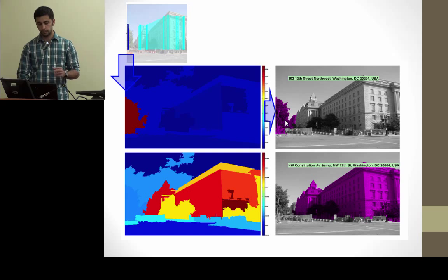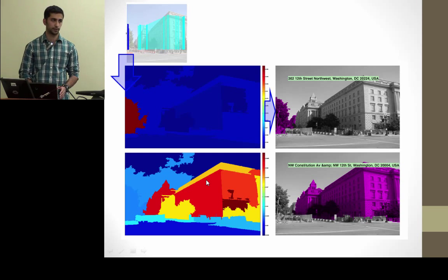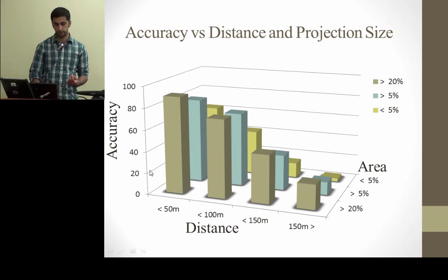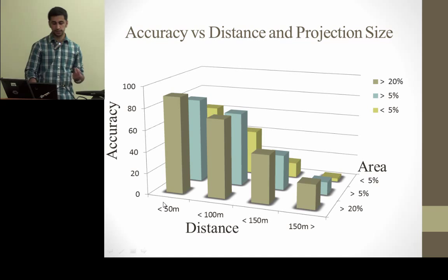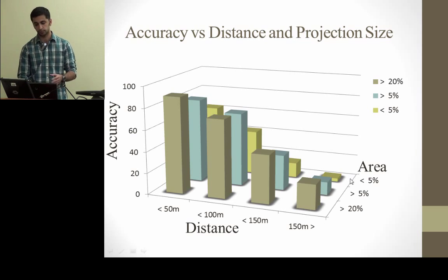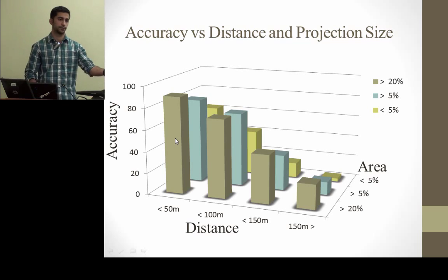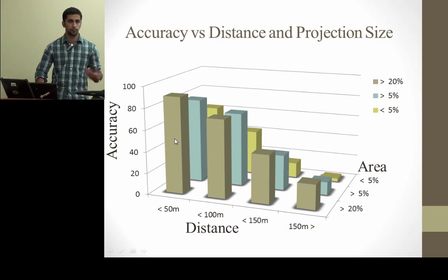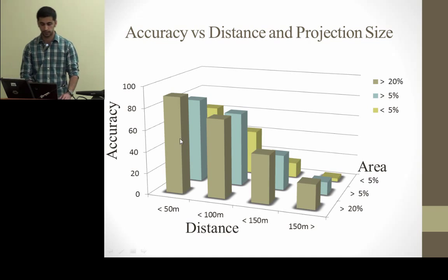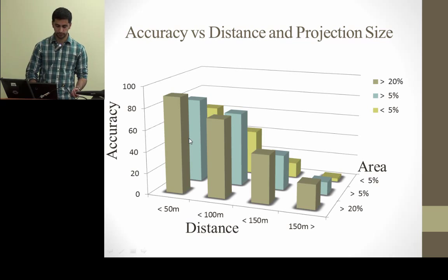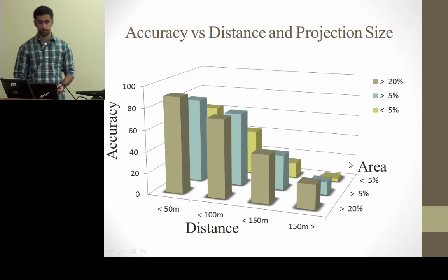So how do we determine if a projection is good? By analyzing many examples and comparing accuracy with respect to the distance of geosemantic segments to the camera and the area covered by their projection, we find a high correlation — intuitively, if something is very close to the camera and has a large projection, we are more likely to get good segmentations. We use high-confidence projections as anchor points to improve lower-confidence ones.